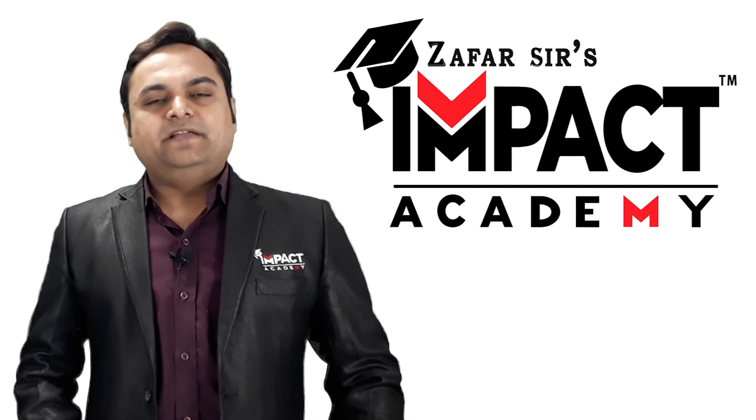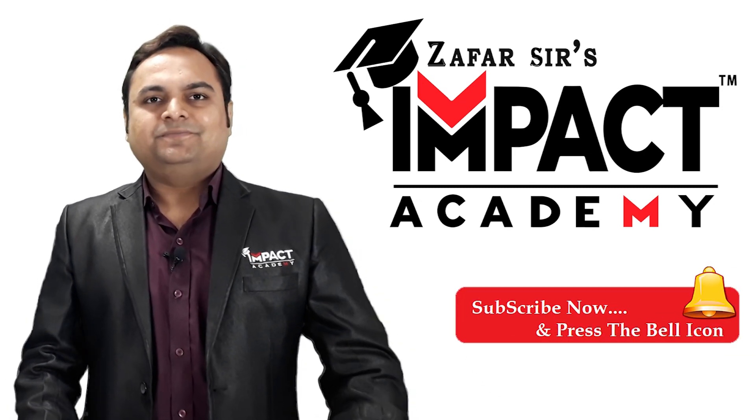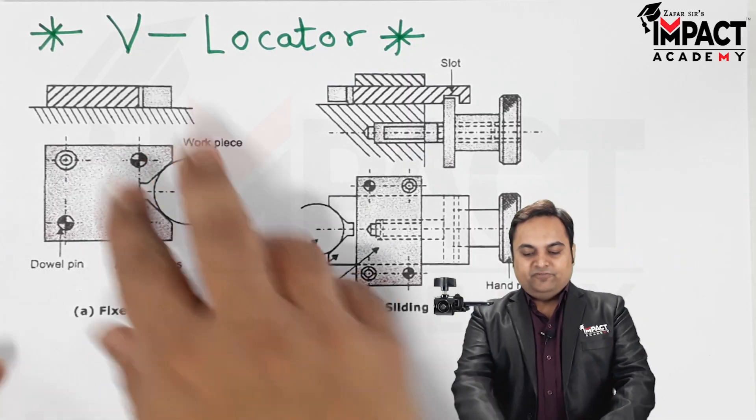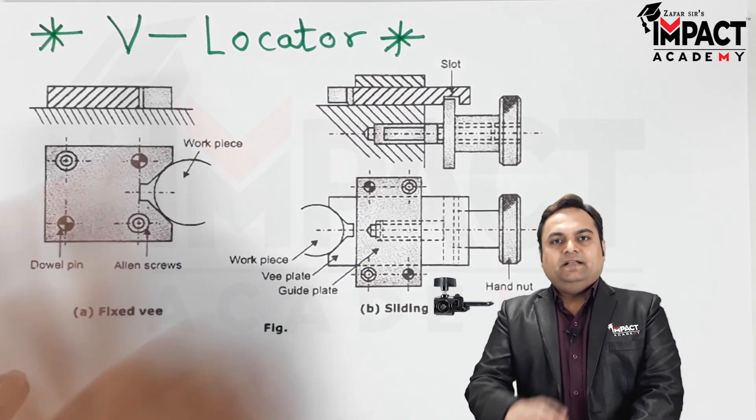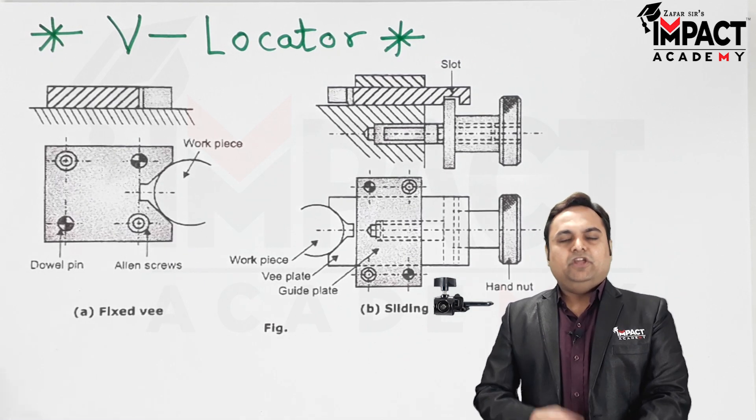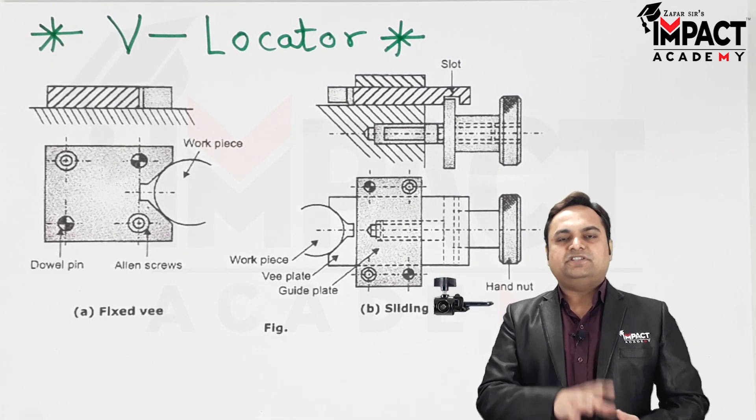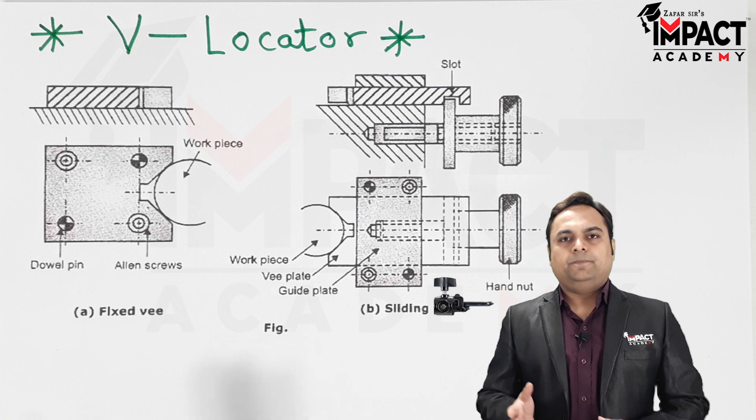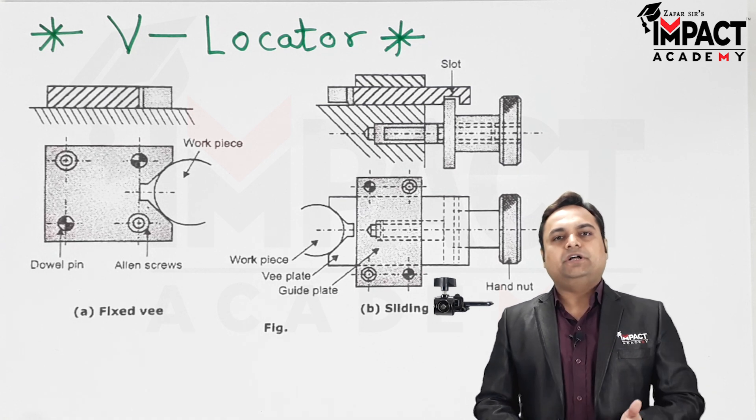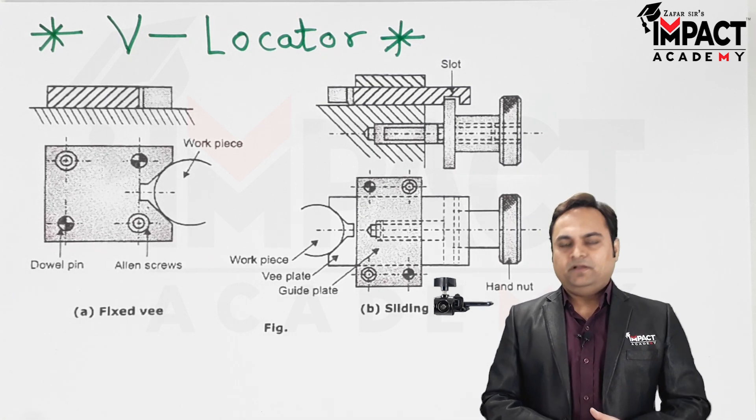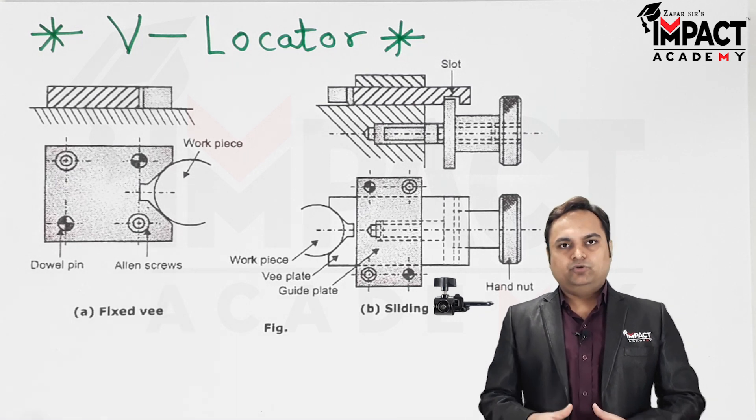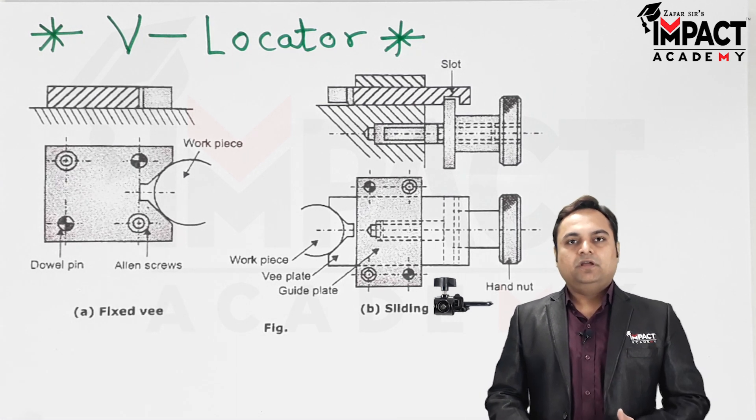Hi friends, here in this video I'll be explaining the V-locator, so let's get started. Here is the diagram of a V-locator. It is used basically in order to support workpieces which are cylindrical or semi-circular in shape. In simple terms, we can say that V-locators are used to locate those workpieces which are having curved surfaces.